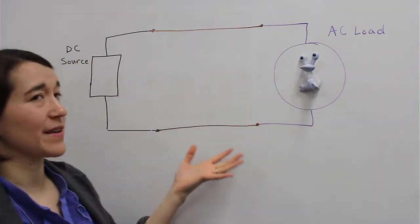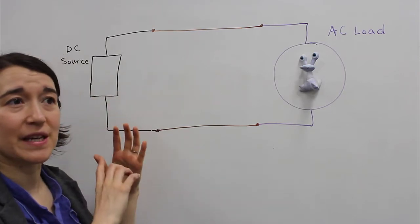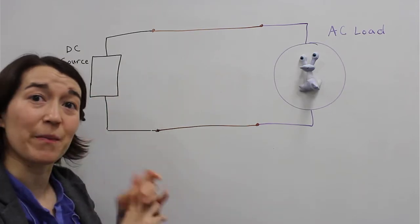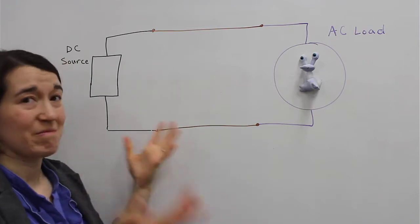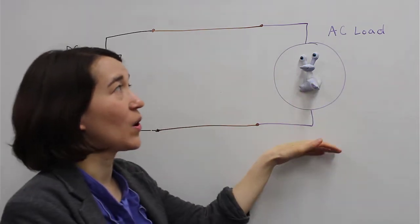Here you can see we have a setup of some DC source. This could be a photovoltaic panel, a battery, or anything else as long as it's DC. And it delivers to our load.